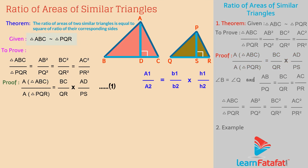But we have given that triangle ABC is similar to triangle PQR. Therefore, angle B is equal to angle Q, and also AB divided by PQ is equal to BC divided by QR is equal to AC divided by PR. This is relation 2.